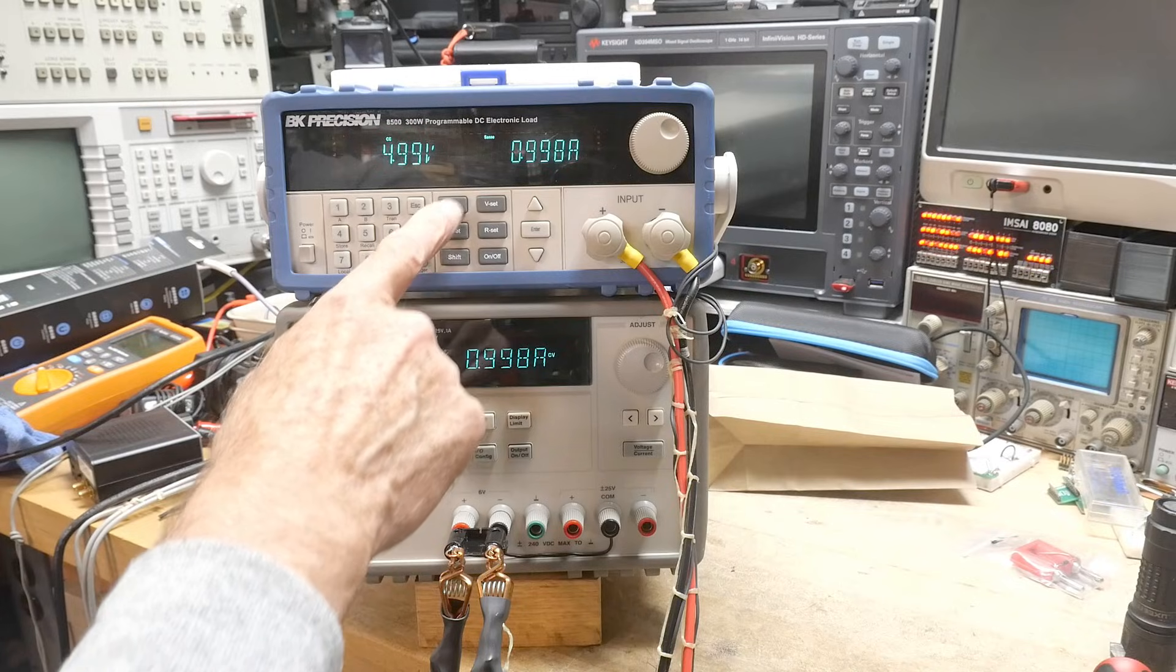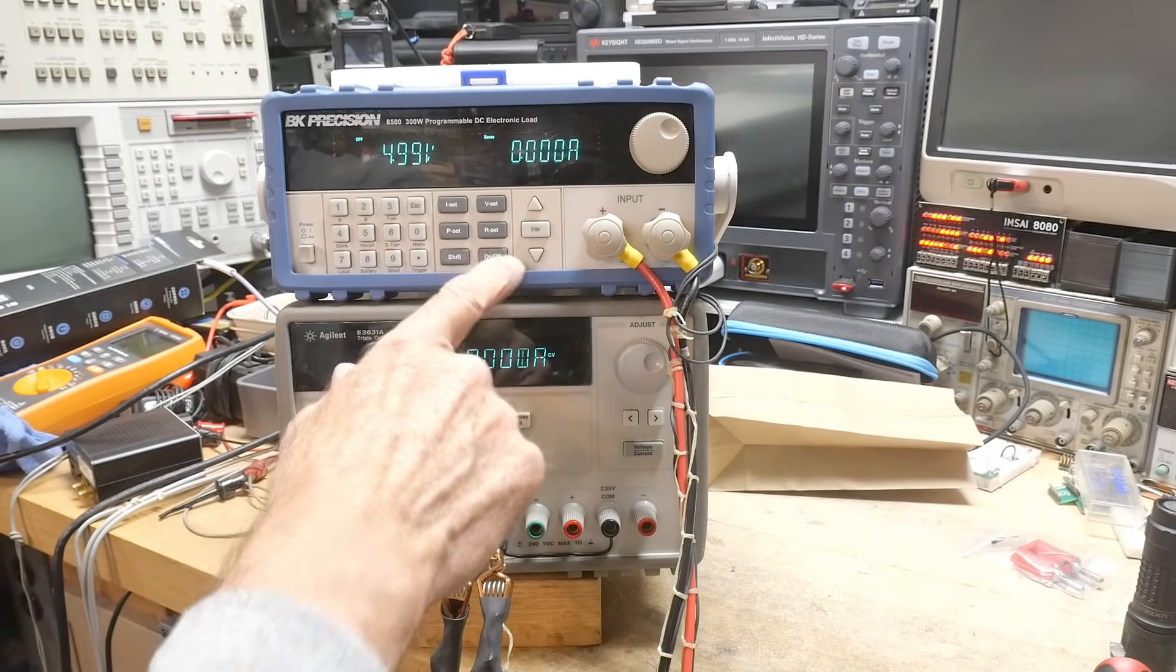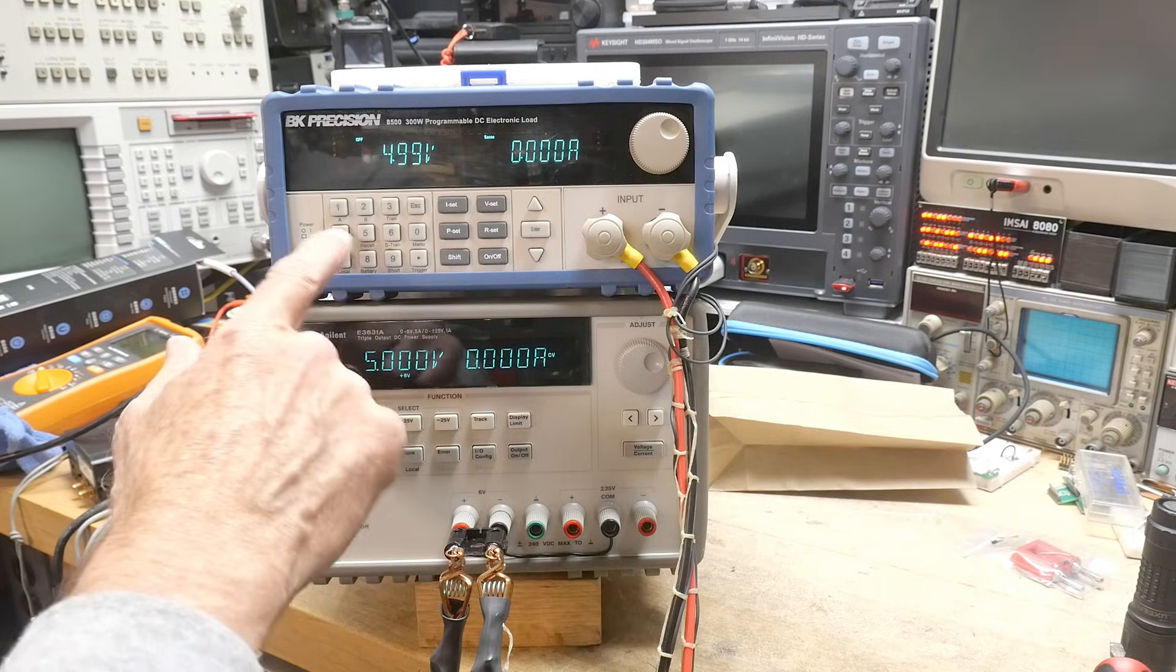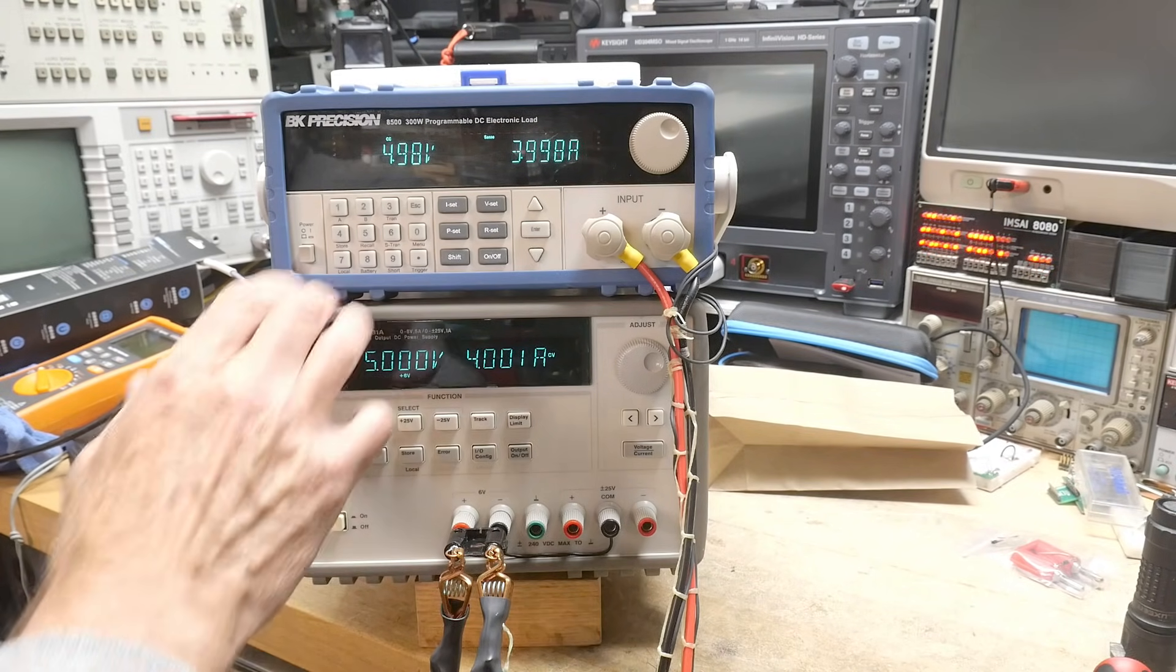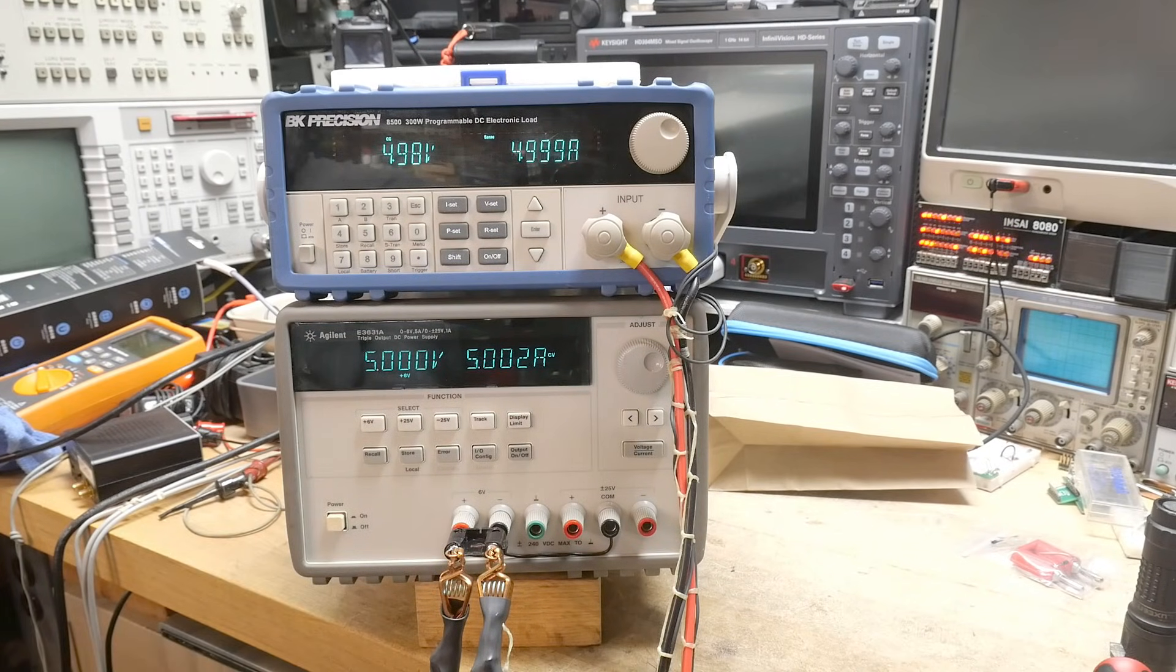Okay, so now we can draw more current. Let's draw 4 amps, and 4 amps. Let's draw 5 amps. There we go. There we go. So it's working really, really well.